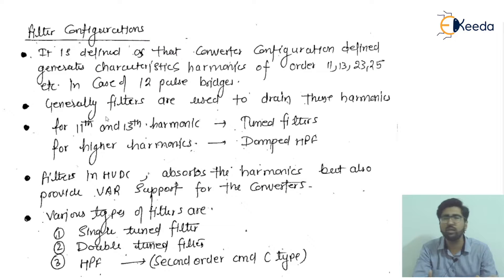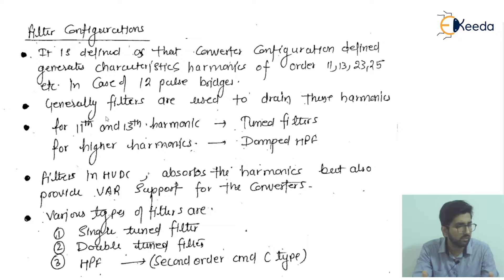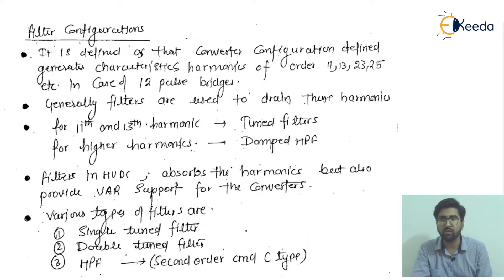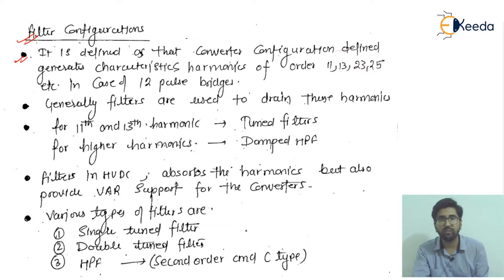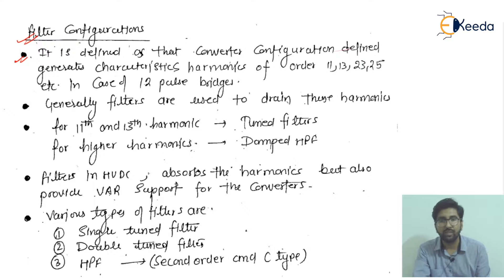What are the different filter configurations used in power systems or system lines for HVDCs? We'll start with HVDC configurations. The converter configuration defines the characteristic harmonics of the order 11, 13, 23, and 25 in the case of 12-pulse bridges, as we have studied in harmonics.